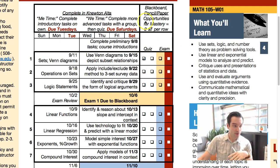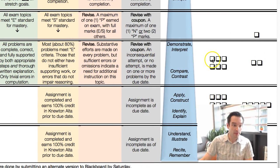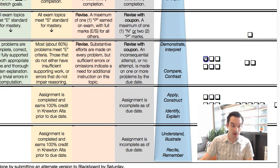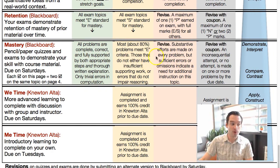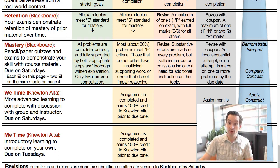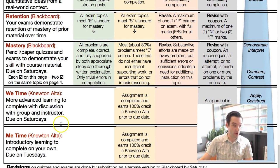You'll need two checkmarks in order to claim mastery for a topic. That second checkmark can come later on an exam, or much later on the final exam. Once you've gotten those two or more checkmarks for a given topic, you can claim a mastery checkmark in your grade sheet. Two full marks — satisfactory or exemplary — on either a quiz or an exam gets you mastery for that topic.